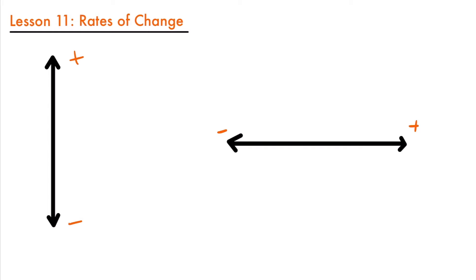An example of this could be a car driving in a straight line, or a ball rolling in a straight line — things where there is no change in height. When we describe the motion of moving objects, we typically describe their change in position. And when describing position, we can also view the speed at which something is moving, or the velocity. The velocity is a rate telling us how fast the position is changing.